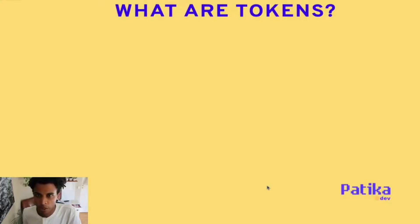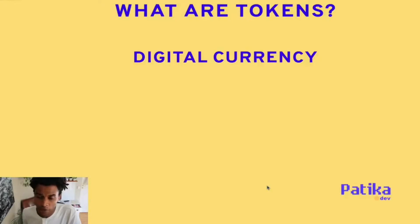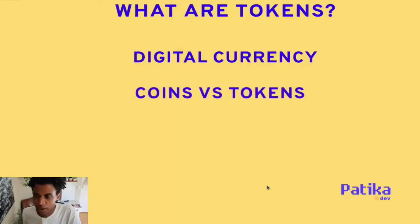So let's look at what exactly are tokens. Tokens are digital currency — not any physical money that we're used to in traditional finance, but completely digital. They also have an assigned value, as currencies do, and can be traded or exchanged. You might have also heard about coins. What is the difference between coins and tokens?